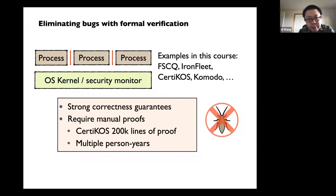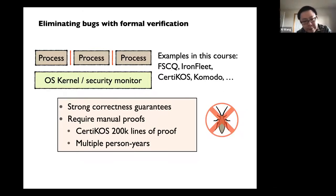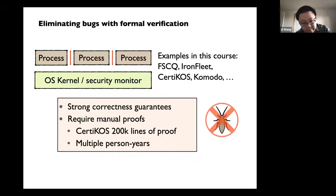One particular cost or premium you need to pay for formal verification is proofs. If you have done your labs, you have seen those manual proofs that are oftentimes much, much larger than your implementation and your specification.